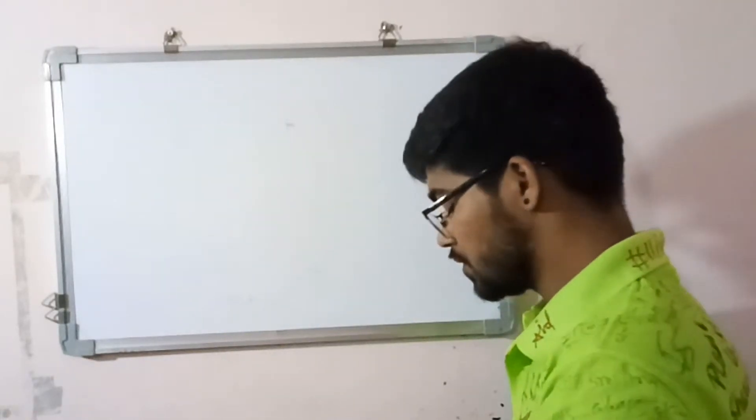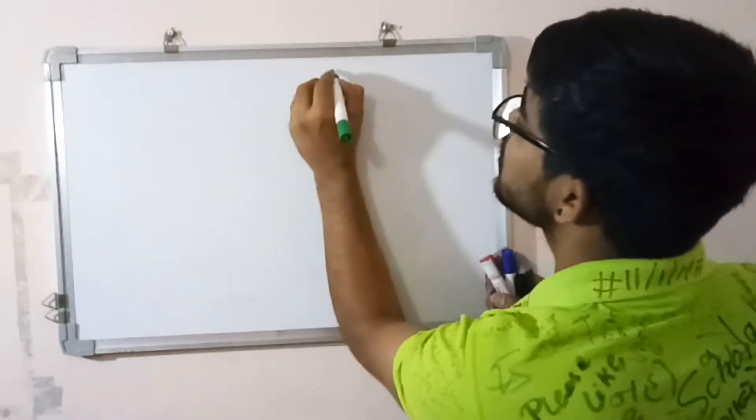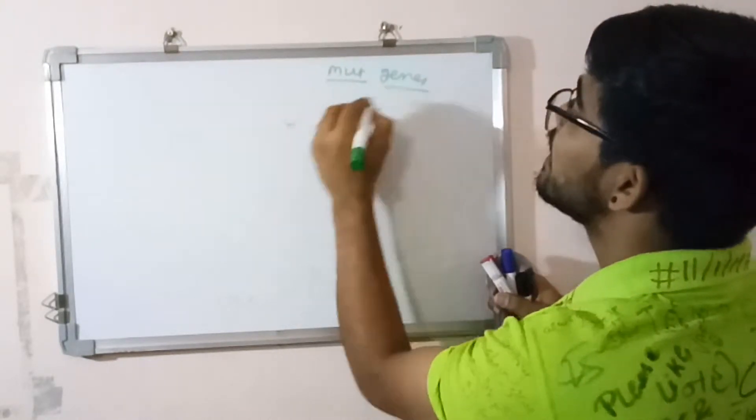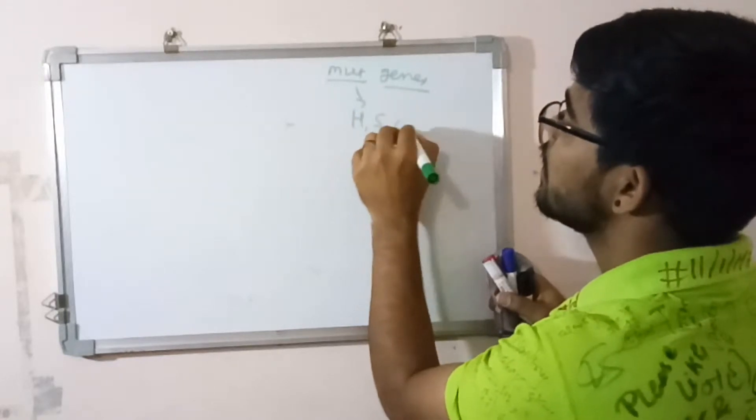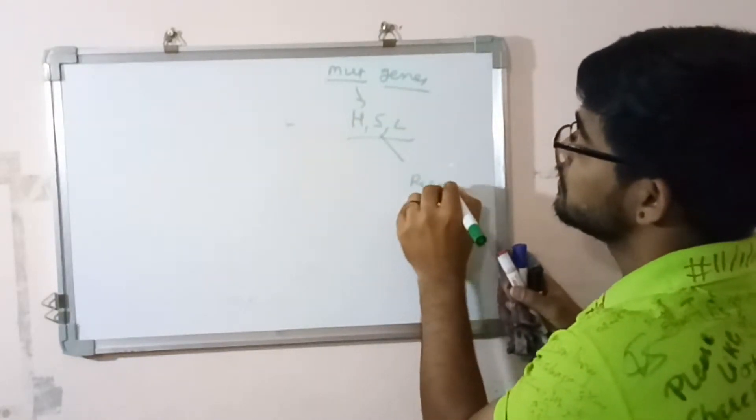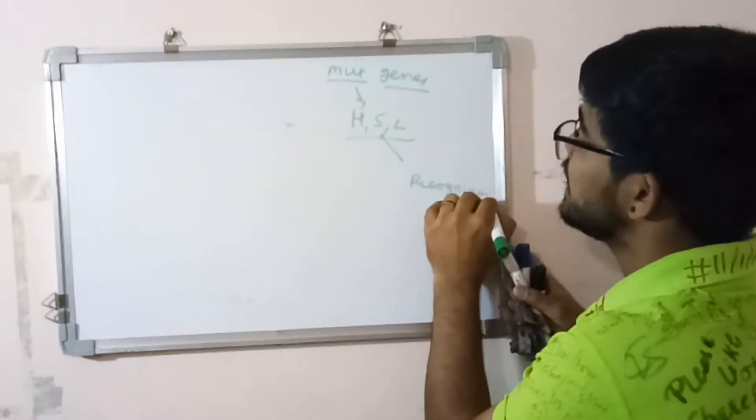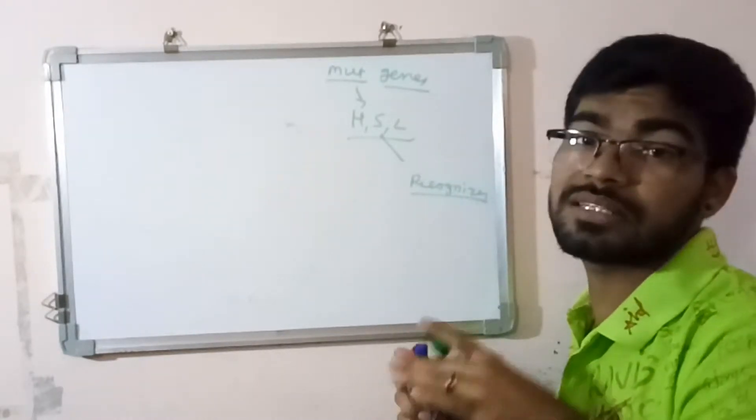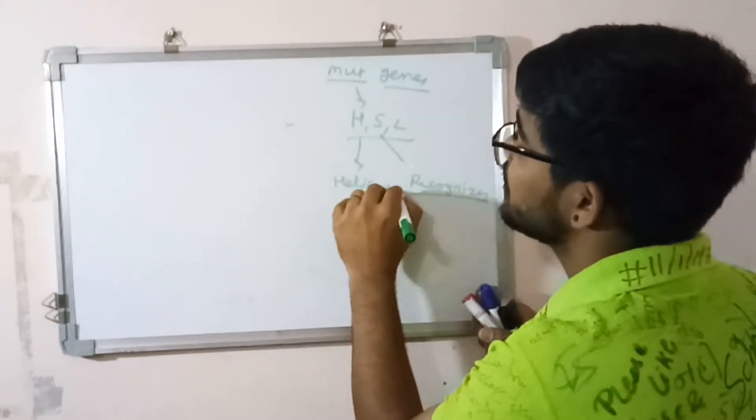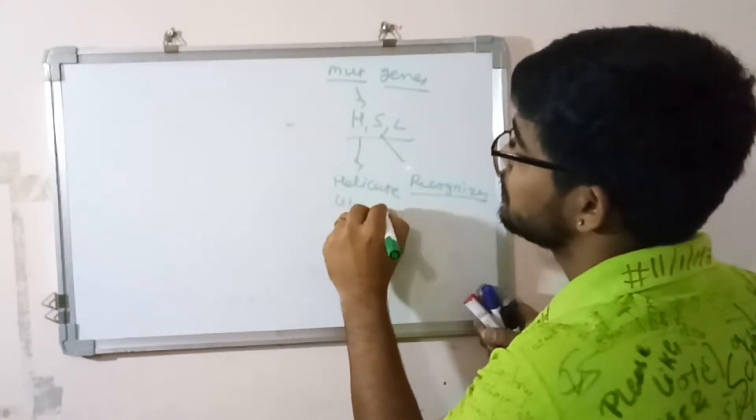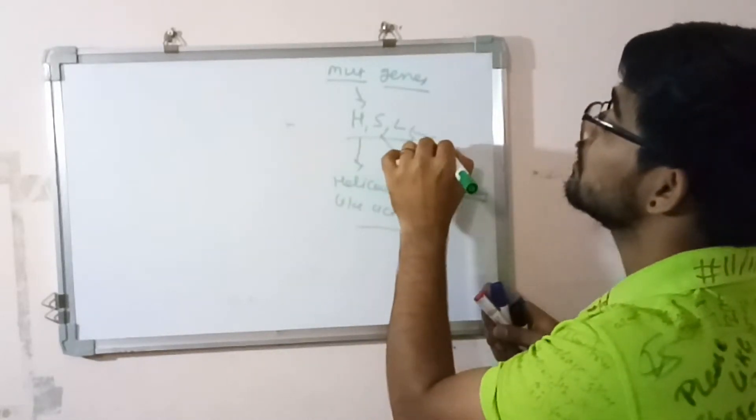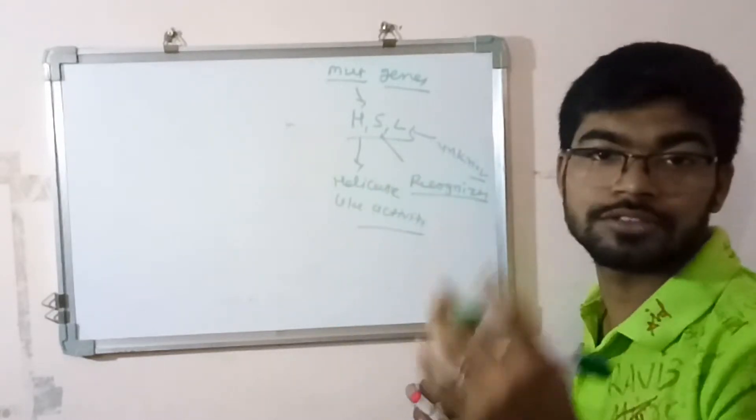The Mut genes have three products: H, S, and L. Here the S works as a recognizer. It only recognizes where the damage occurs. H has a helicase-like activity, and the function of L is still unknown.